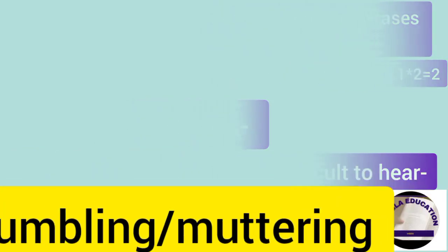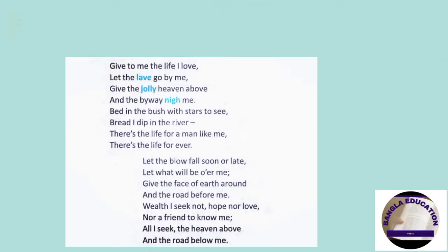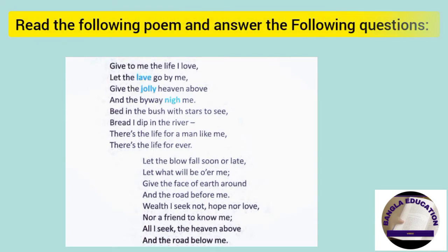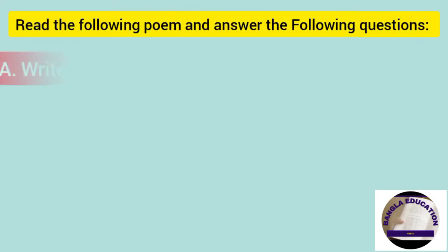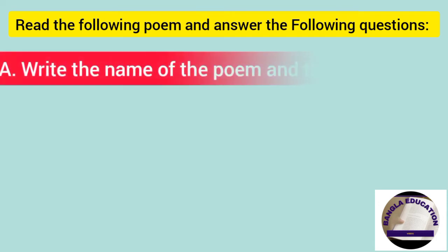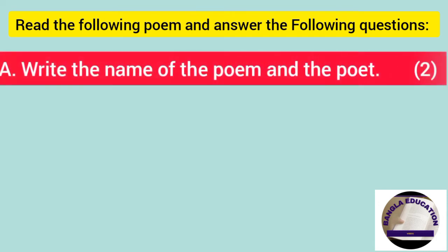Next question. So, reading scene, read the following poem and answer the following questions. A. Write the name of the poem and the poet. Answer is, the name of the poem is The Vagabond, written by Robert Louis Stevenson.